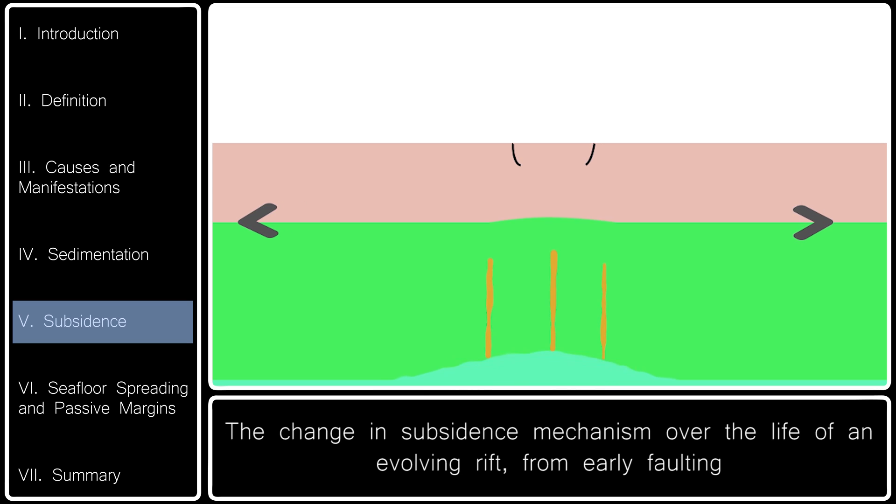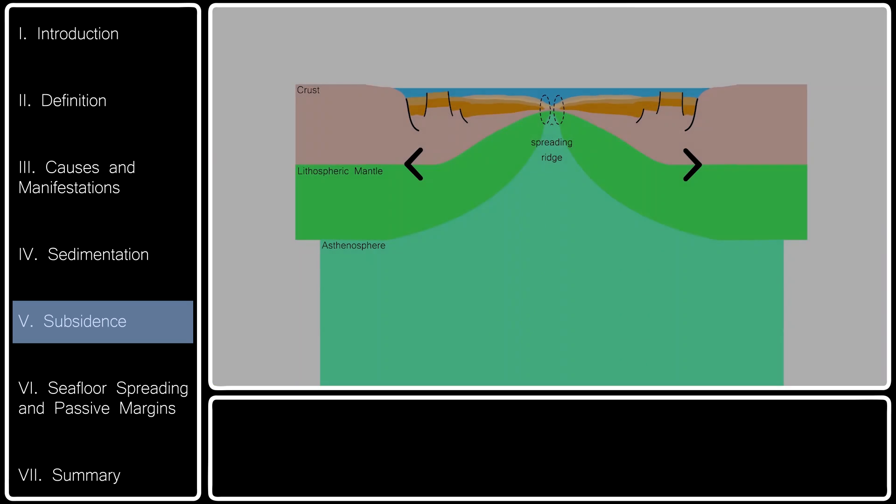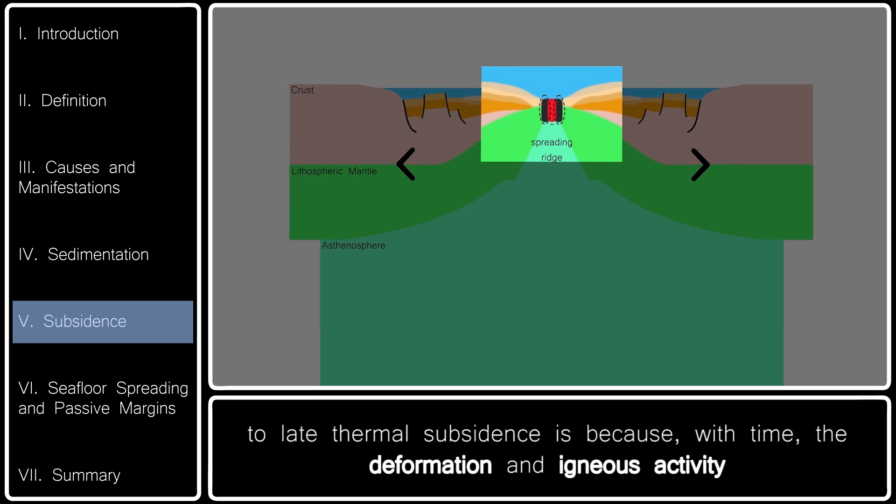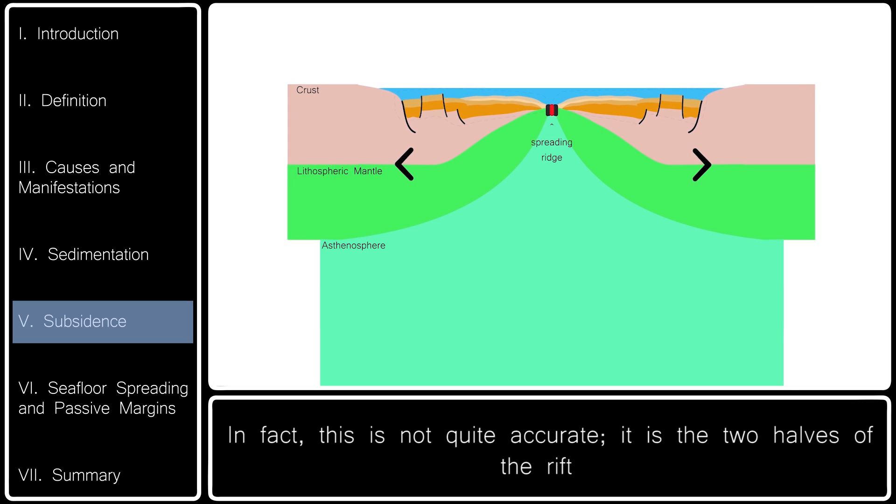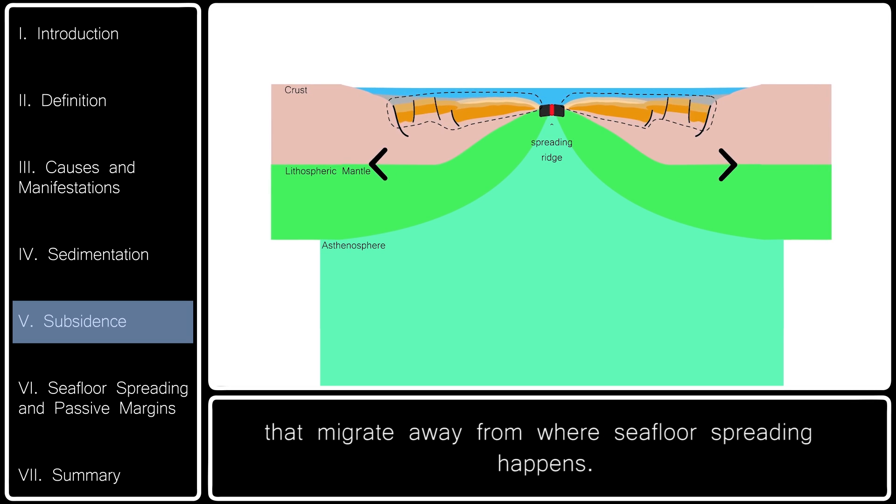The change in subsidence mechanism over the life of an evolving rift from early faulting to late thermal subsidence is because, with time, the deformation and igneous activity migrates away from the original rift. In fact, this is not quite accurate. It is the two halves of the rift that migrate away from where seafloor spreading happens.